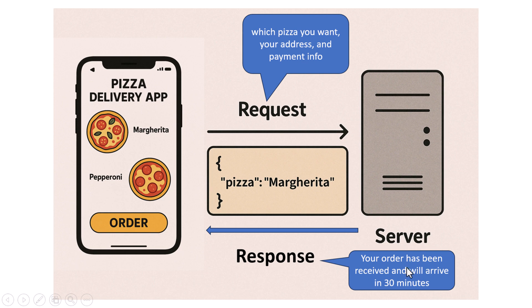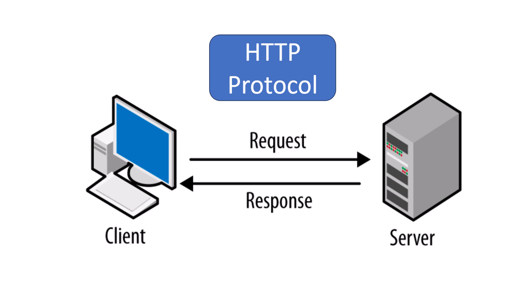The server then processes the request, confirms your order, and sends a response back — something like 'Your order has been received and will arrive in 30 minutes.' All this communication happens through the REST API. You don't see the code, you don't see the messages, but they are happening in the background every time you use a modern app.